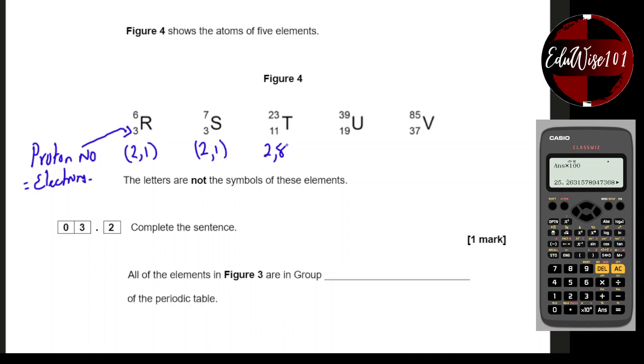For T: 2,8,1 gives 11 electrons. For U: 2,8,8,1 gives 19. I'm pretty sure V also has one electron in the outer shell. For GCSE, you need to know the electron configuration up to the 20th element, so I'm not going to write this one down. They all have one electron in the outer shell, which means they are all in group 1.